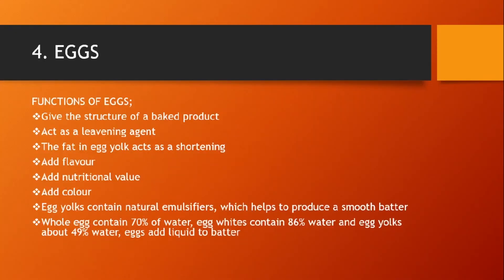The fourth most common ingredient is eggs. The functions of eggs include: giving structure to baked products, acting as a leavening agent, and the fat in egg yolk also acts as a shortening. Eggs add flavour, nutritional value, and colour. Egg yolks contain a natural emulsifier which helps produce a smooth batter. The whole egg contains 70% water, egg whites contain 86% water, and egg yolks contain about 49% water — meaning eggs can also act as a liquid.